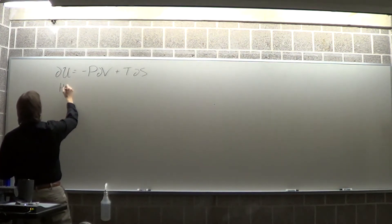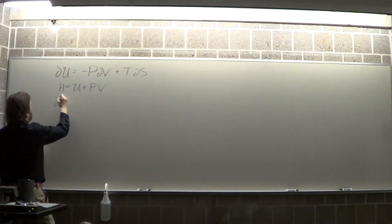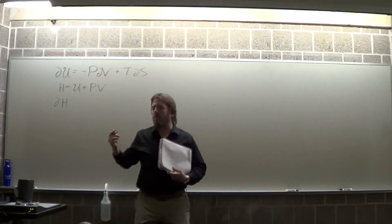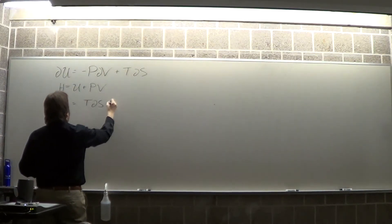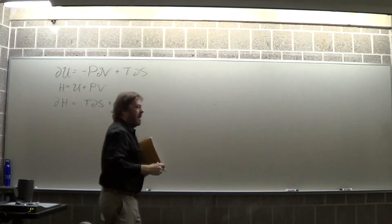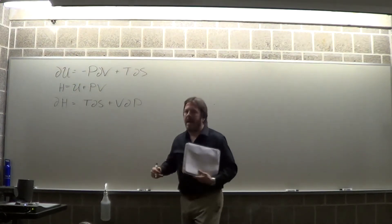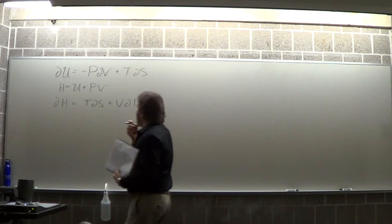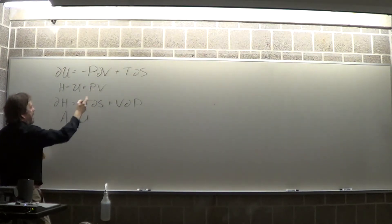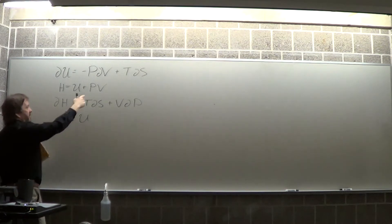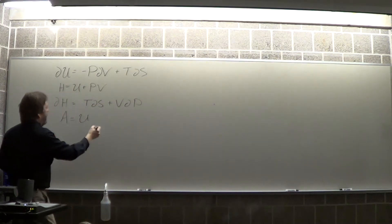Enthalpy H is U + PV. I'm not going to do the derivation now, but given this you should be able to get that dH = TdS + VdP. There's a derivation to do that — don't memorize this, derive it. If you're not sure how I go from here to here, you're deficient on a lot of grounds. See me in office hours — you're not screwed, but you have to do something.